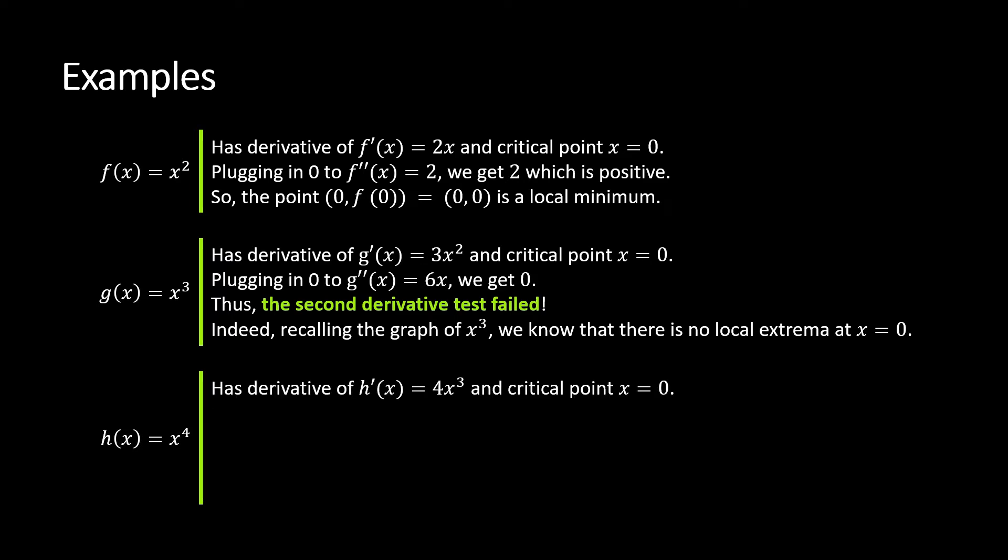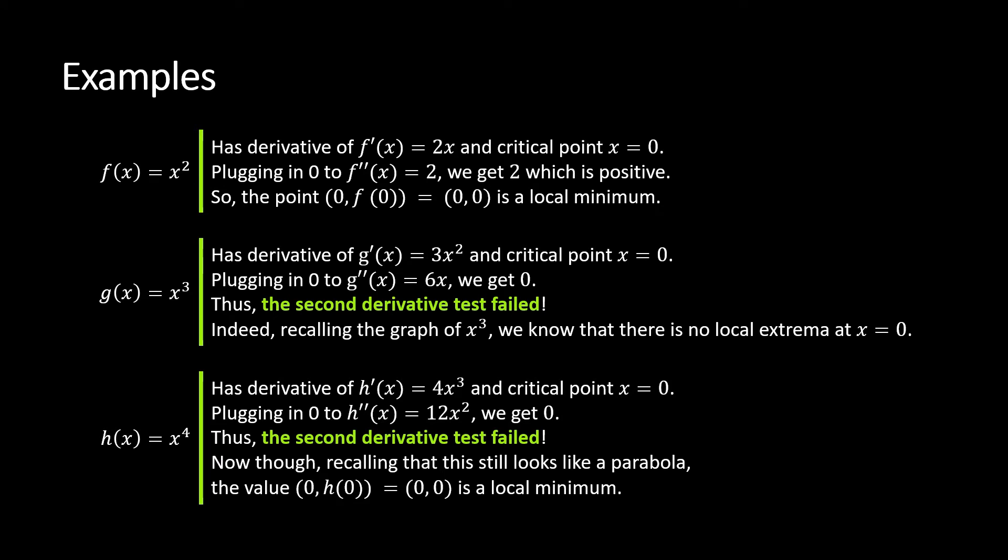Let's look at one more example: h(x) = x⁴. Taking the derivative, 4x³, again critical point at zero. Plug in zero to the second derivative—taking another derivative we get 12x², plug in zero, we get zero. So again, the second derivative test failed. Pattern recognition, you may look at g(x) and think there must not be a local extrema. But if you think about what x⁴ looks like, it looks just like a tighter version of the parabola that x² looks like. So in fact it does have a minimum at zero. So (0,0) is a local minimum.